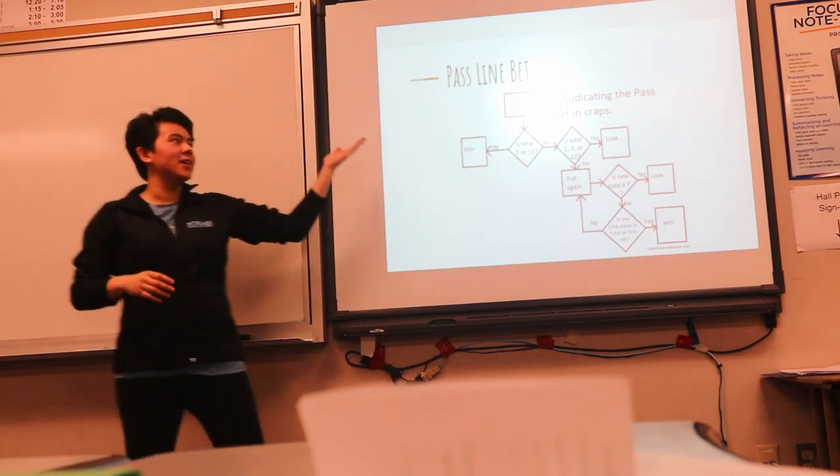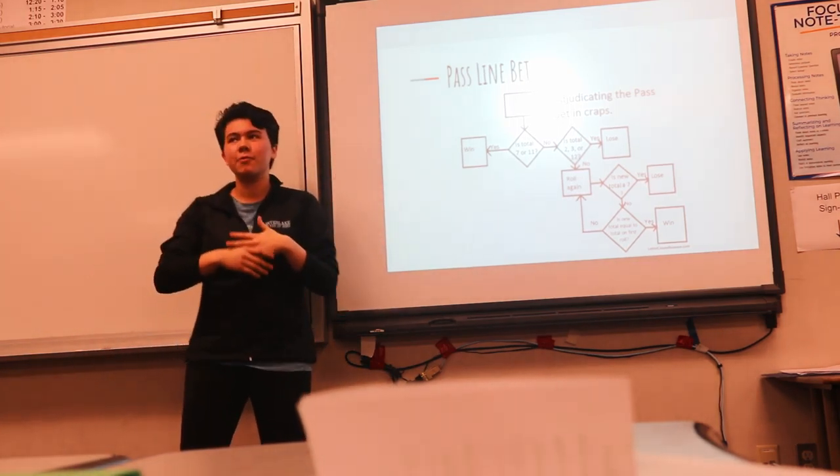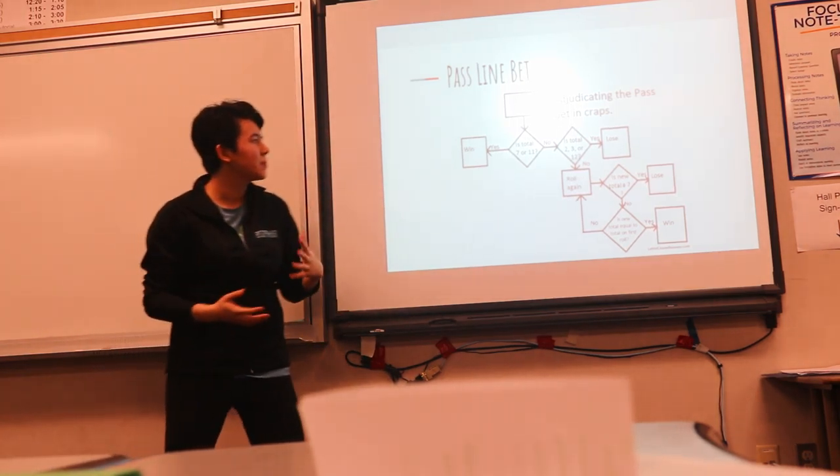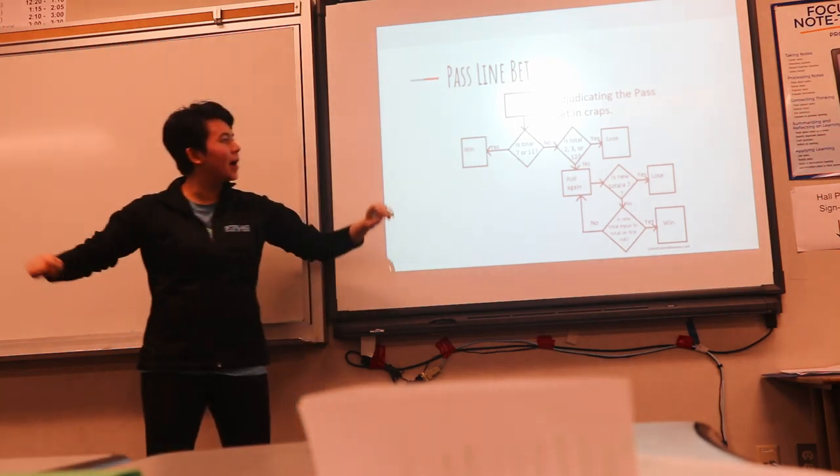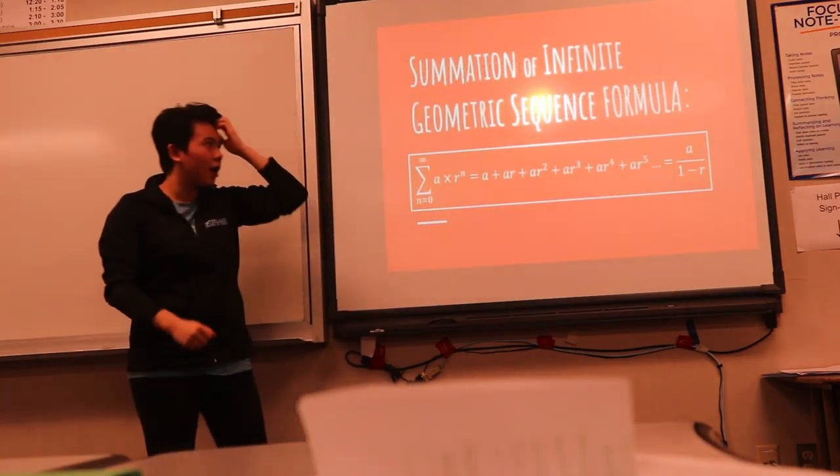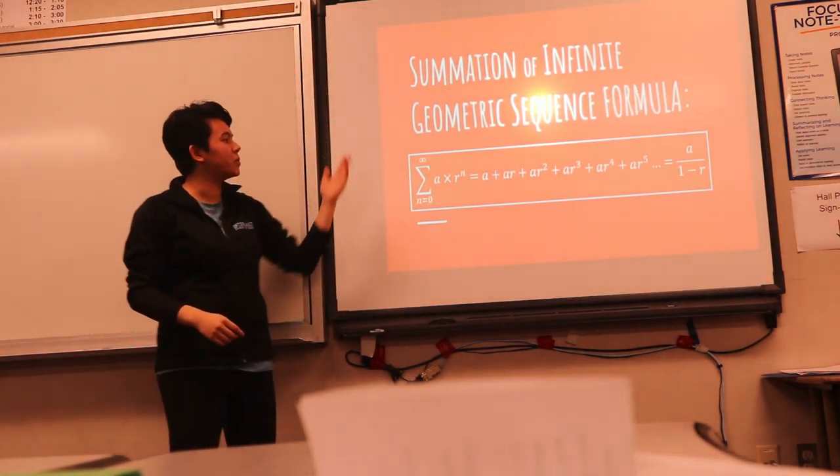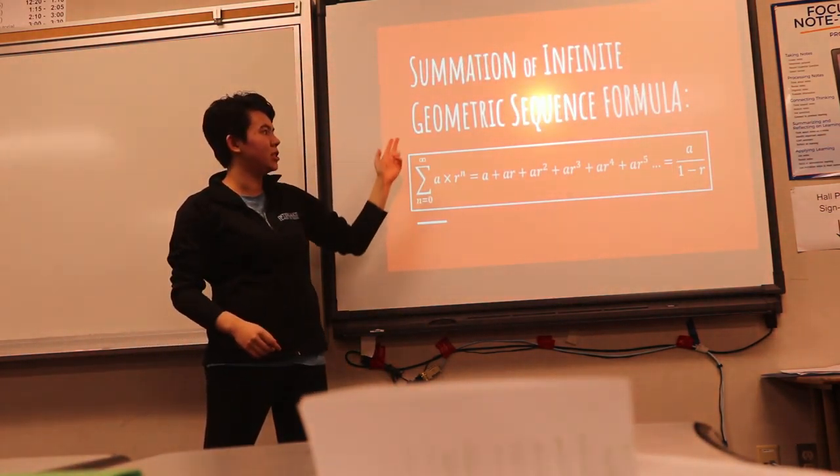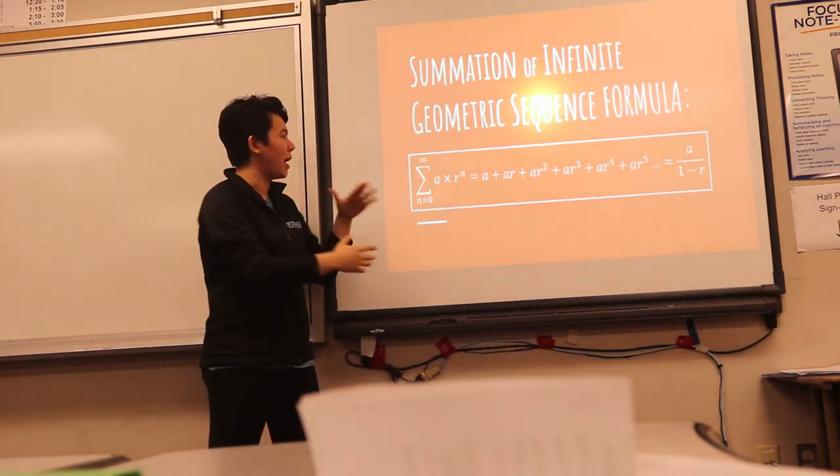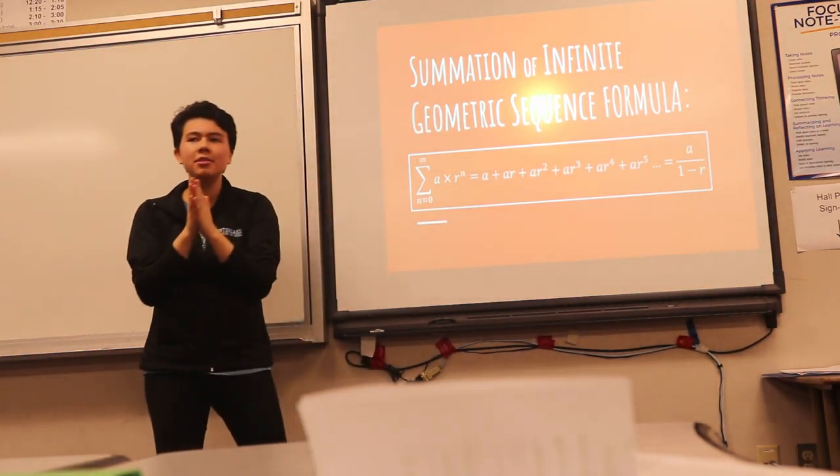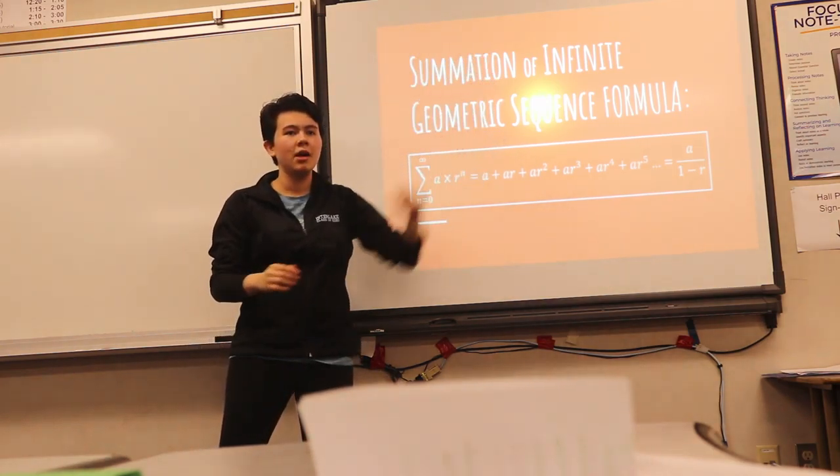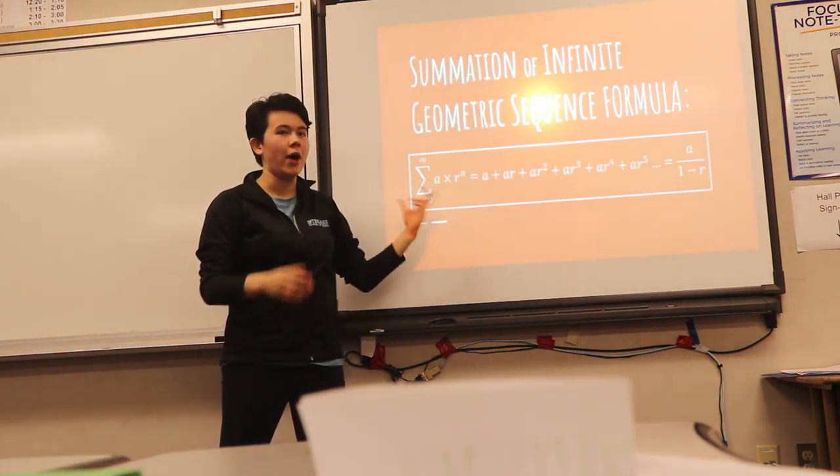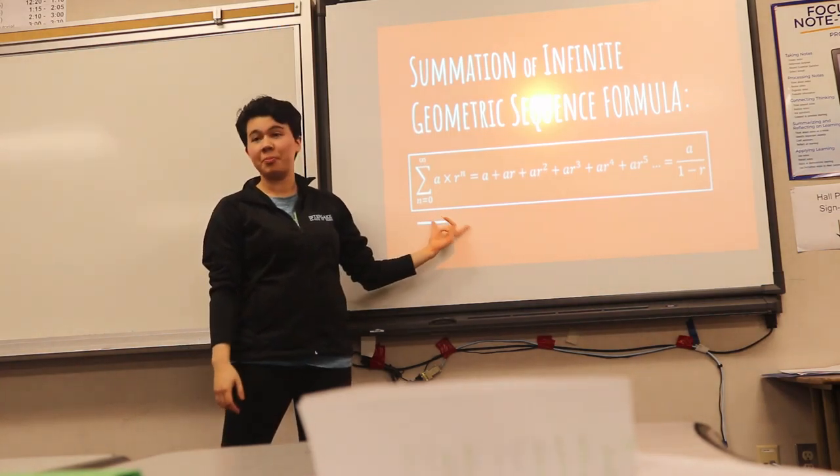So the second bet is a multi-roll bet, which takes many different rolls to figure out if you win or lose, and it's a very complicated one that I don't have time to explain. But through this bet, I would use the summation of infinite geometric sequences to basically find out the total probability because of the slight chance that each thing will keep going on into infinity. We actually have a formula in math that says how to sum these things up, which is pretty wicked, I think.